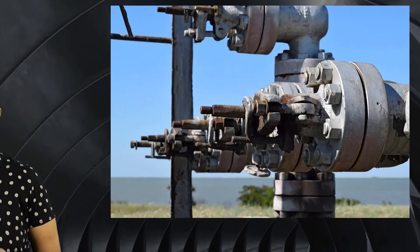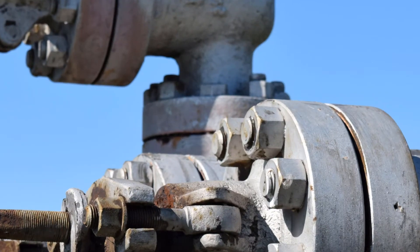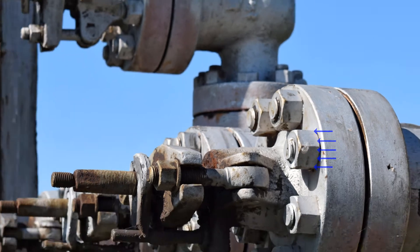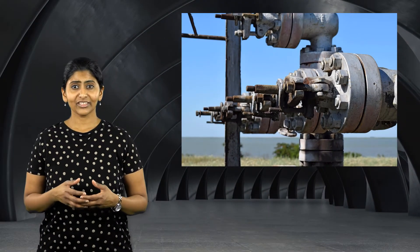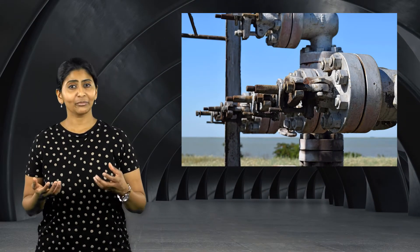For example, in case of a bolted joint, when the bolt head and one of the mating components come in contact with each other, they exert contact forces on the other body. Depending on the relative stiffness of the bolt head and the mating component, both the bodies may deform to some extent.